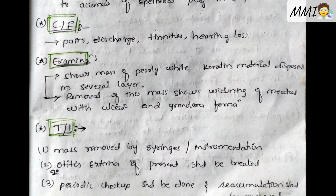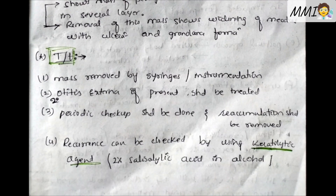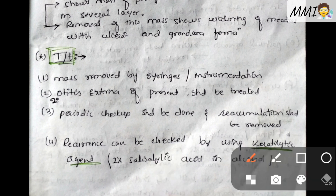For treatment, the mass is removed by syringing or instrumentation. Any secondary infection present should be treated, and periodic checkups should be done since there are higher chances of reaccumulation. Reoccurrence can be checked by using a keratolytic agent — 2% salicylic acid in alcohol — which is the most commonly used agent. It breaks the keratin in the mass and softens it.